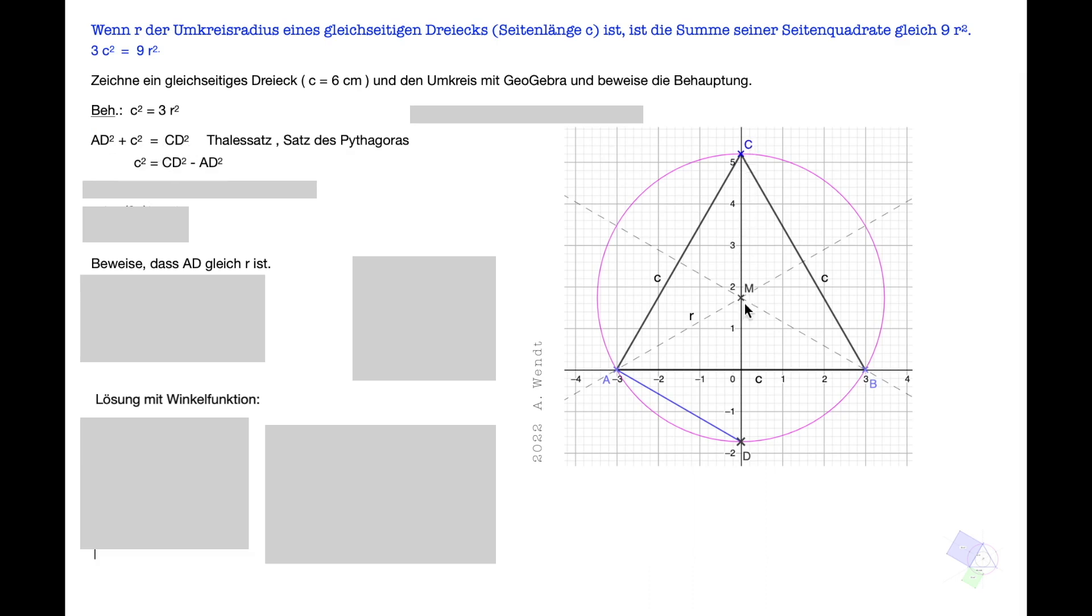Wenn wir jetzt erkennen, dass die Seite CD² gerade R plus R ist, also 2R und die Seite AD R entspricht, dann kommen wir zu folgendem Schluss. C² gleich 2R in Klammern zum Quadrat minus R². 2R in Klammern zum Quadrat sind 4R². Minus R² sind 3R². C² ist 3R².